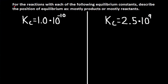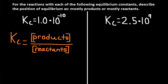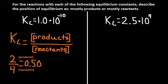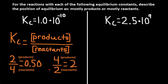For reactions with each of the following equilibrium constants, describe the position of equilibrium as mostly products or mostly reactants. For this equilibrium constant equal to 1.0 × 10⁻¹⁰, this negative power will make the answer a decimal number. Kc is equal to concentration of products divided by concentration of reactants. For example, 2 divided by 4 equals 0.50, and 4 divided by 2 equals 2. When reactants are bigger than products, we get a decimal number. So the answer would be mostly reactants, since when we have more reactants than products the answer is a decimal number.